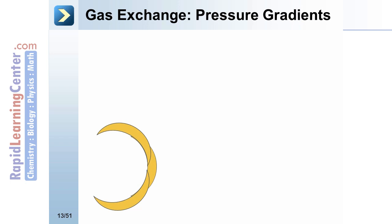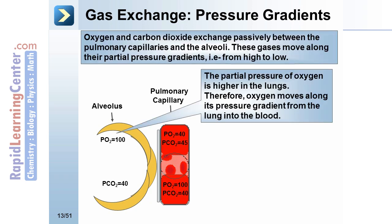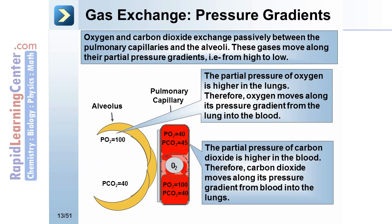Oxygen and carbon dioxide exchange passively between the pulmonary capillaries and the alveoli. These gases move along their partial pressure gradients — from high to low. The partial pressure of oxygen is higher in the lungs, so oxygen moves from the lungs into the blood. The partial pressure of carbon dioxide is higher in the blood, so carbon dioxide moves from the blood into the lungs.